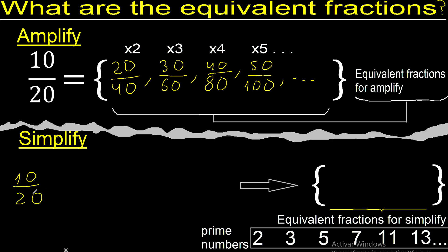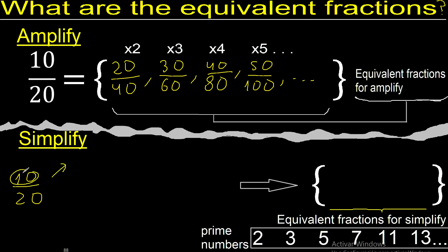Now, 10 and 20 can be divided by 2: 10 divided by 2 is 5, 20 divided by 2 is 10.